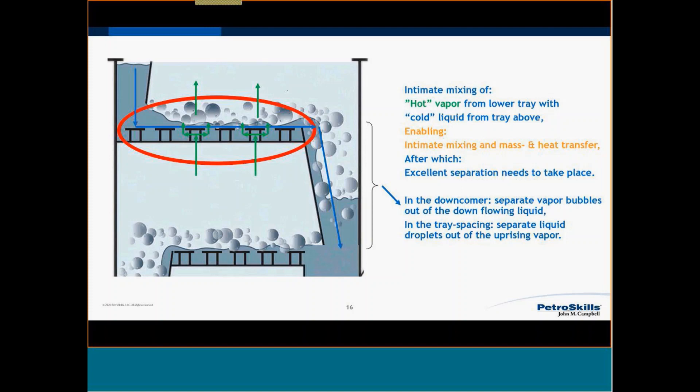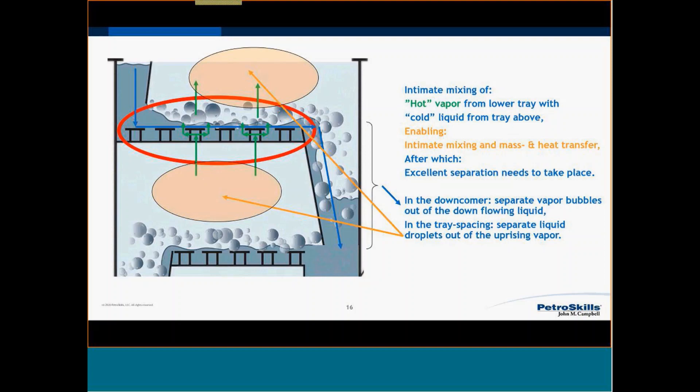A tray has a maximum capacity. If you have too much liquid at a certain moment, the downcomer cannot accommodate that liquid anymore — you are forced to have too high a flow. A tray is designed for certain conditions.